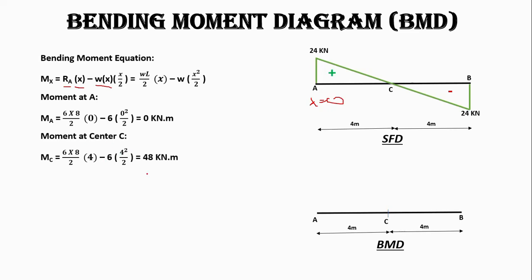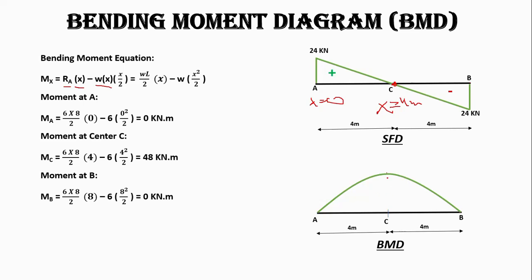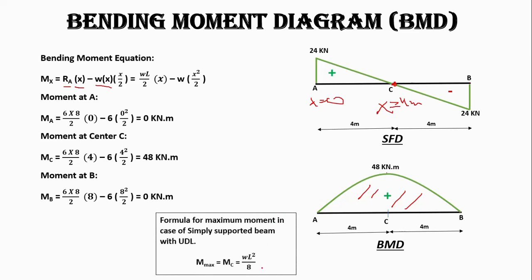At the center, x equals 4 meters, giving a moment of 48 kilonewton-meters. At point B, x equals 8 meters, giving a moment of 0 again. The bending moment diagram shows a maximum positive bending moment of 48 kilonewton-meters at the center. The maximum bending moment can also be calculated using the formula wL²/8 for a simply supported beam with uniformly distributed load.